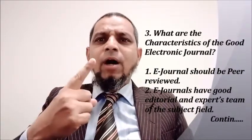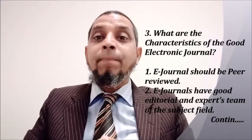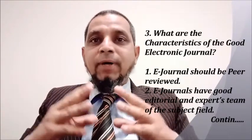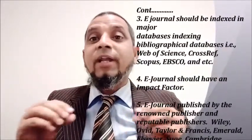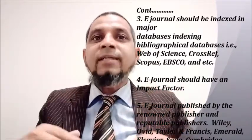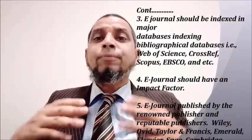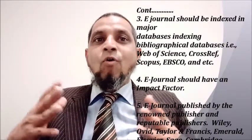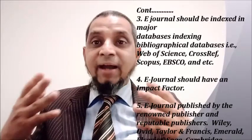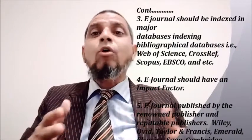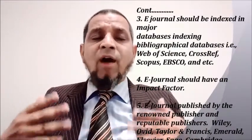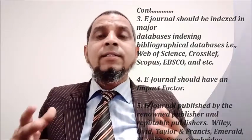Point number three: what are the characteristics of a good electronic journal? Number one, it should be peer-reviewed. Number two, it should have a good editorial and expert team in the subject field. Number three, it should be indexed in a major indexing or bibliographical database like Web of Science, CrossRef, Scopus, EBSCO, and others. Number four, it should have an impact factor. Number five, it should be published by a renowned or reputable commercial publisher like Wiley, Ovid, Taylor and Francis, Emerald, Sage, and others.